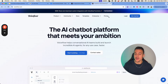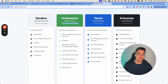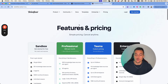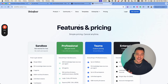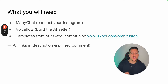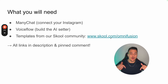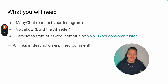The second thing is going to be to sign up to VoiceFlow. When you're on the VoiceFlow homepage, navigate over to pricing. You're going to need the professional plan for $50 a month — if you take annual billing you can save an additional 20%. The link to sign up is in the description below. The third thing is going to be to sign up to our school community at school.com/OmniFusion, because that is where you're going to be able to access all the templates — the ManyChat template as well as the VoiceFlow template — for free.